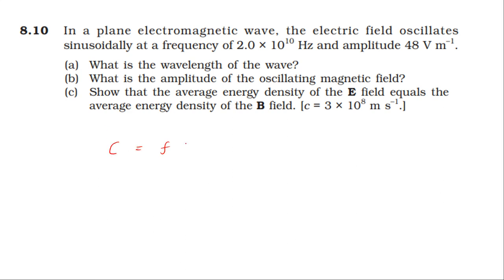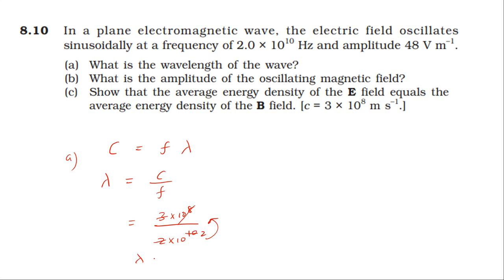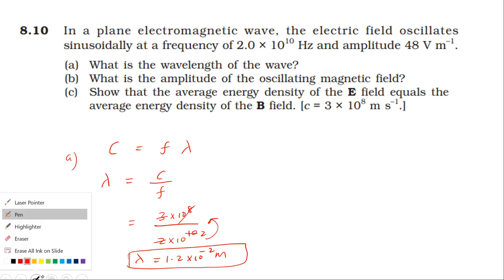The speed of light equals frequency times wavelength, so wavelength equals speed of light divided by frequency. Calculating: 3×10⁸ divided by 2×10¹⁰ gives 1.5, so the wavelength is equal to 1.2×10⁻² meters.